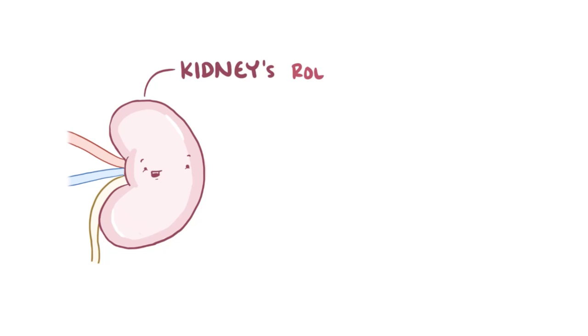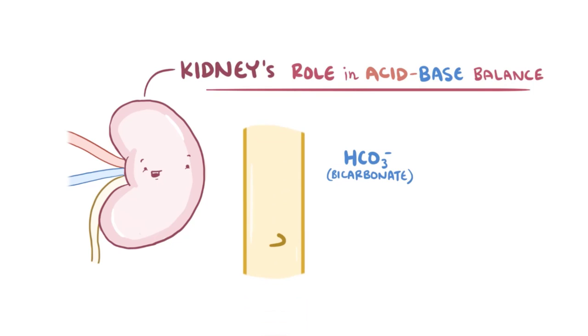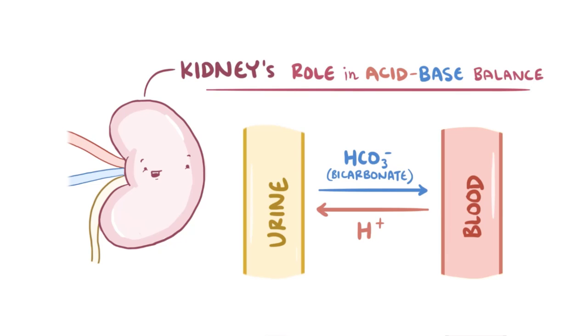The kidneys have two main ways to maintain acid-base balance. Their cells reabsorb bicarbonate or HCO3- from the urine back to the blood, and they secrete hydrogen ions into the urine. By adjusting the amounts reabsorbed and secreted, they can balance the bloodstream's pH.